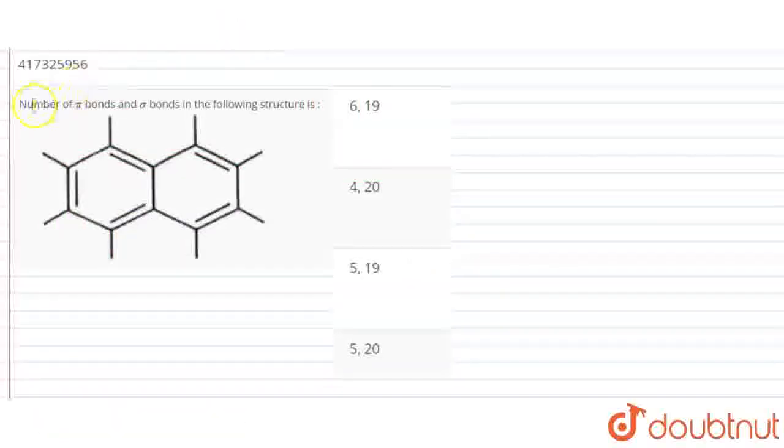Hello everyone, we have a question about number of pi bonds and sigma bonds in the following structure. We have a big molecular structure. We have a number of pi bonds, sigma and pi bonds.